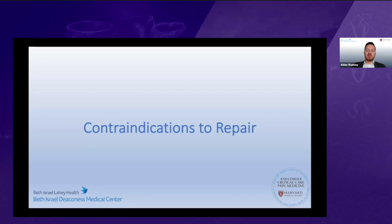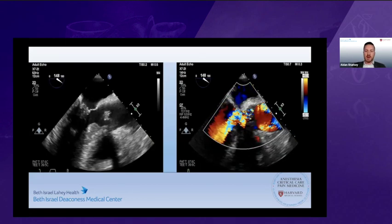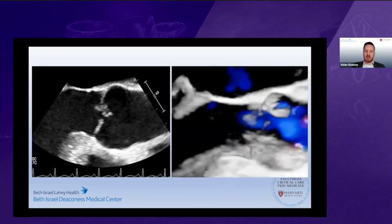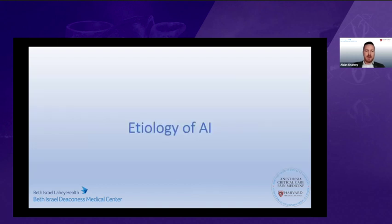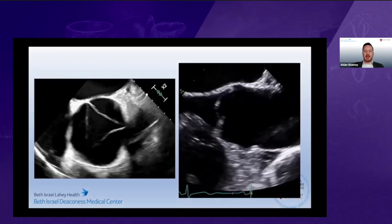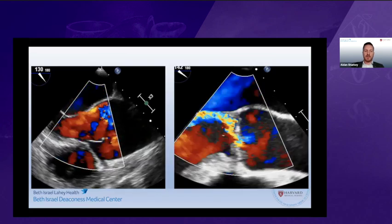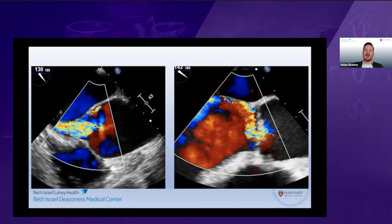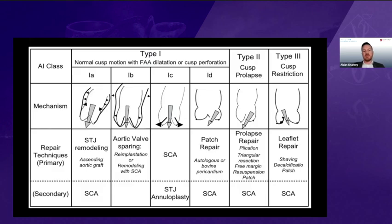We need to rule out immediate contraindications to repair, such as a stenotic valve that is generally not amenable to repair, and valves with acute infective endocarditis that may have significant valvular destruction. We then need to look at the etiology of the aortic insufficiency, whether it's a coaptation failure due to dilatation or whether there is an element of prolapse. The direction of the AI jet highlights this — a central jet due to malcoaptation versus an eccentric jet due to prolapse or leaflet perforation.